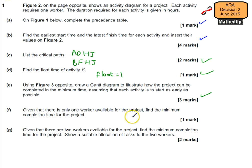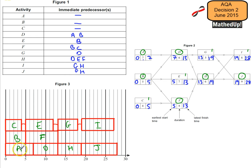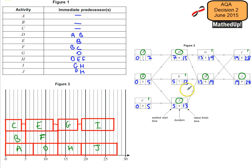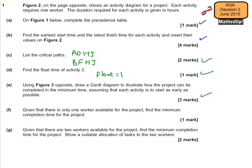Part F says: given that there is only one worker available, find the minimum completion time. Since each activity requires one worker, all activities have to happen consecutively. So I just line them up: A, D, H, J, then B, F, C, E, G, I. Adding the durations: 7 plus 5 plus 4 plus 8 plus 7 plus 6 plus 5 plus 6 plus 9 plus 8. That gives 12, 16, 22, 29, 37, 42, 48, 56, 65. So the sum of all those is 65 hours.